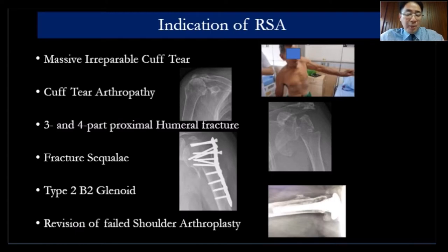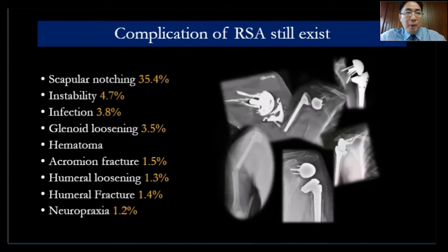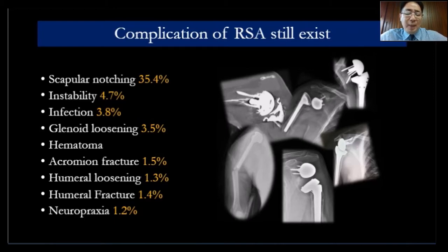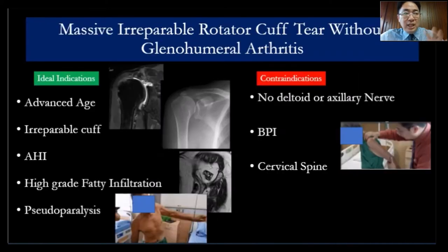In my practice nowadays, I do more reverse compared to anatomic shoulder because the indications keep extending. The three complications we need to be concerned about are: scapular notching, instability, and infection. If you stick to these four key principles, you will have fewer complications.